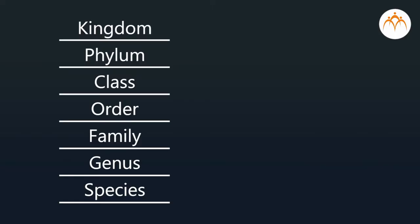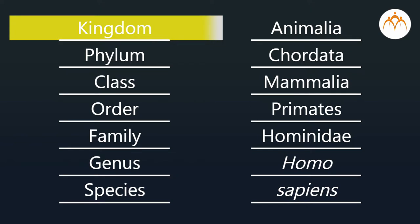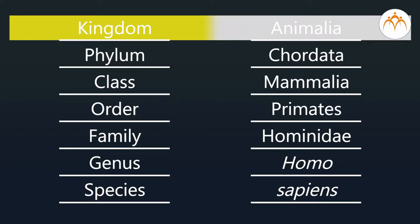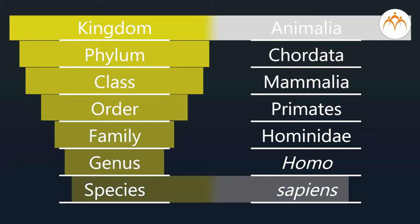Similarly, in biological classification, kingdom is the highest rank. In this group all animals are included, with common features like absence of cell wall, inability to prepare their own food, and showing locomotion. The last rank in this hierarchy is species, which represents only one type of organism — the smallest unit.